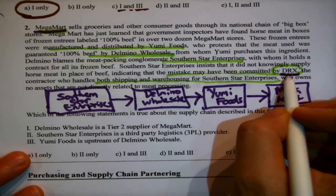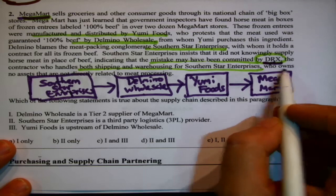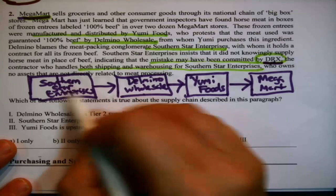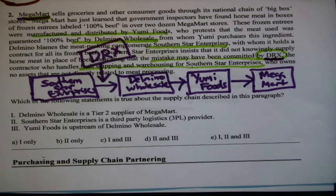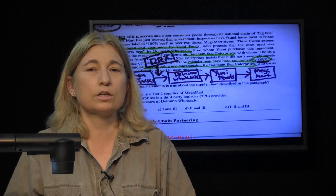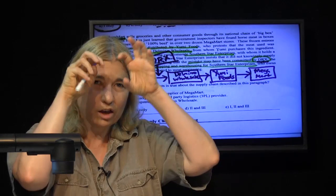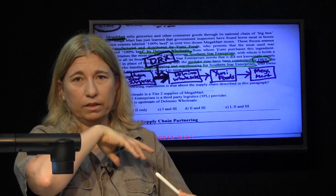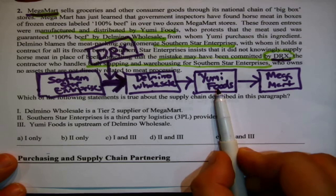You might be tempted to put DRX as a box in the supply chain, but look carefully. Southern Star says the mistake may have been committed by DRX — but DRX doesn't supply cows. They are a contractor that handles both shipping and warehousing, and Southern Star owns no assets not directly related to meat processing. They've just described a third-party logistics — 3PL — provider. DRX is not actually one of the boxes; they're essentially that arrow, the logistics provider in that link.